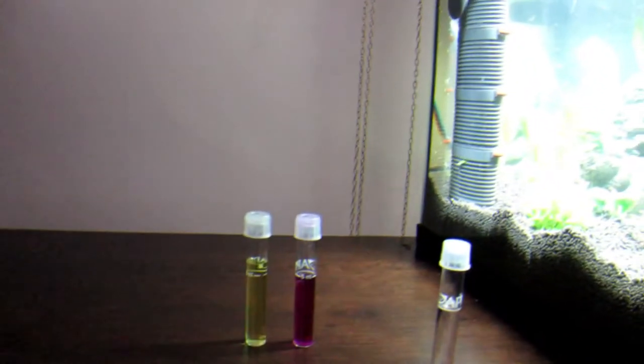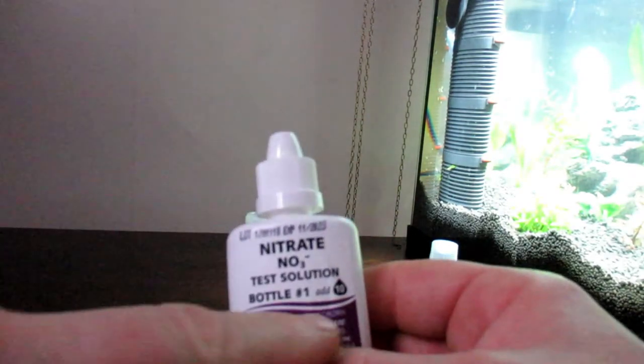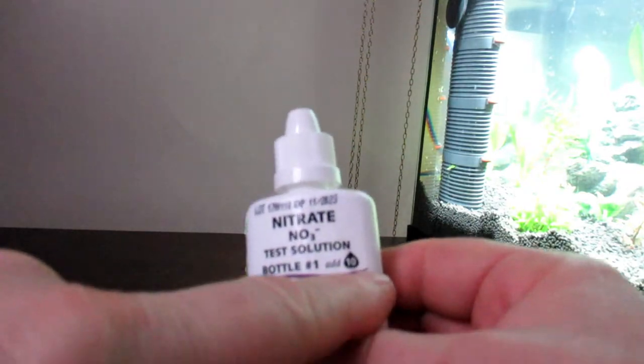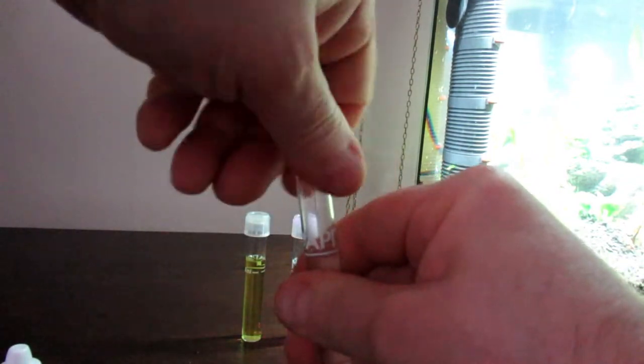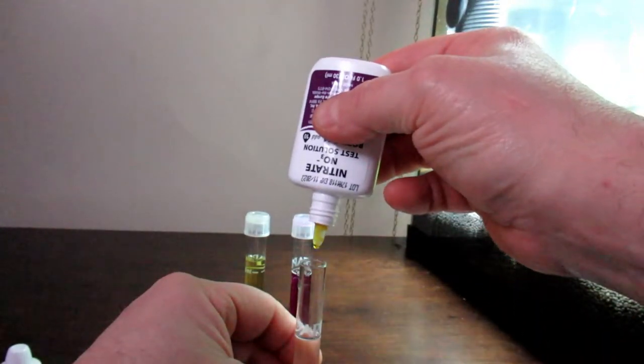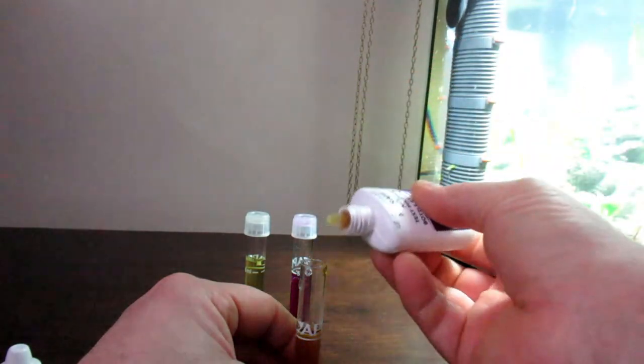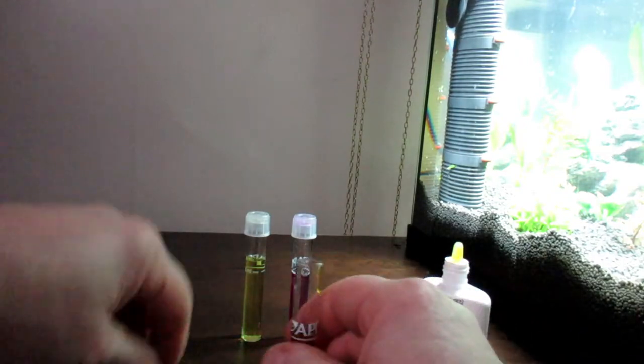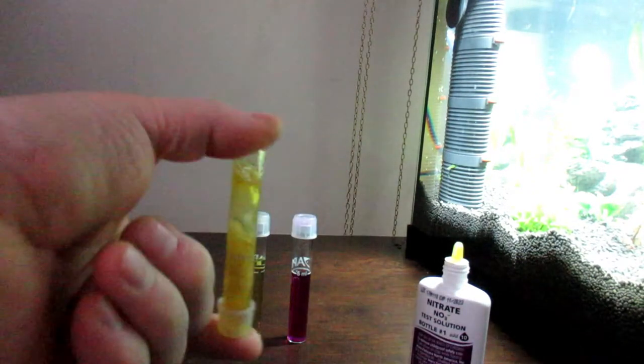Okay, we're doing nitrate next. Same principle, but on this if you have a look on the bottle where it actually says add ten drops. So first thing I'm going to do, take this and add ten drops. One, two, three, four, five, six, seven, eight, nine, ten. Now with this one it actually says to shake vigorously for 30 seconds. You don't need to. I've actually done this before so I know the result anyway.